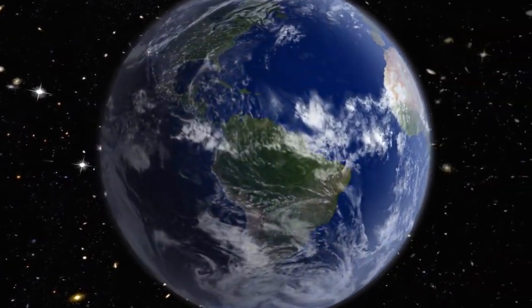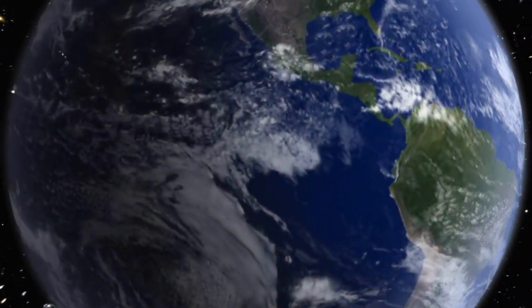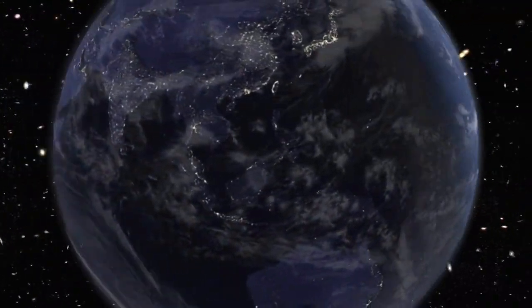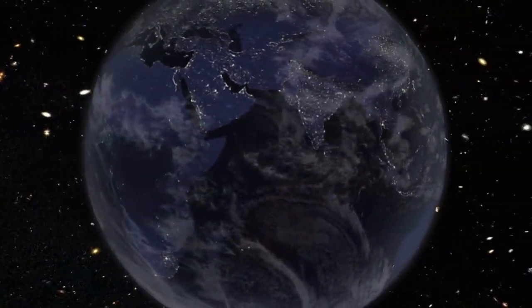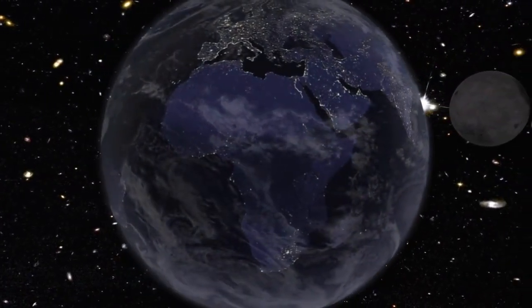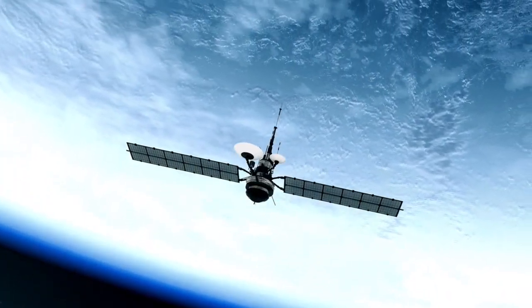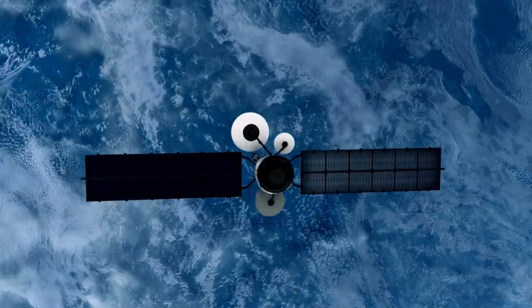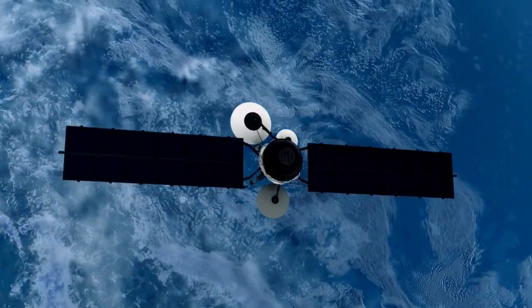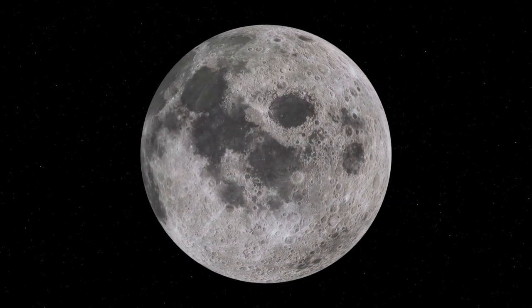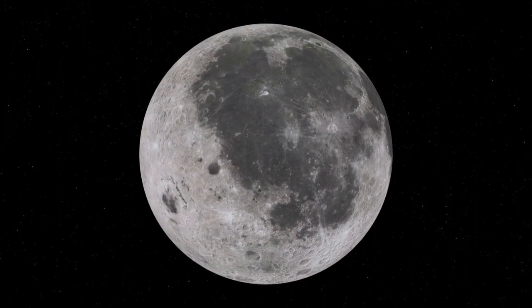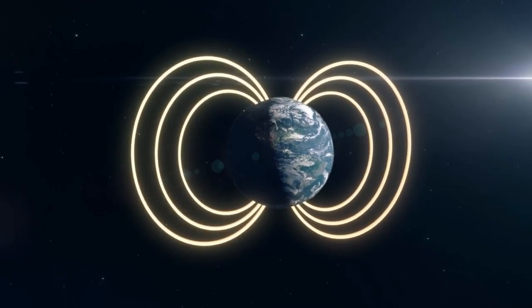Earth is our home planet, and the only one we know of that supports life. It has a rocky composition and is the fifth largest planet in the solar system. Earth's atmosphere is composed mainly of nitrogen and oxygen, and it is the only planet with liquid water on its surface. Earth's Moon is the largest relative to its planet in the solar system.